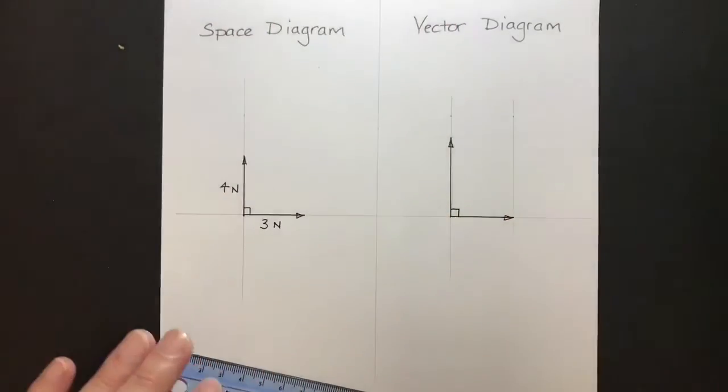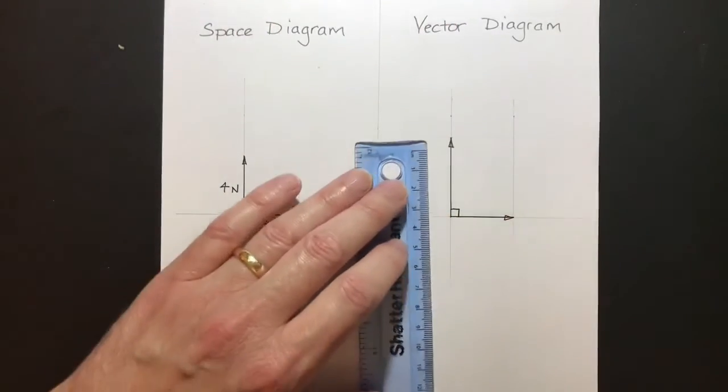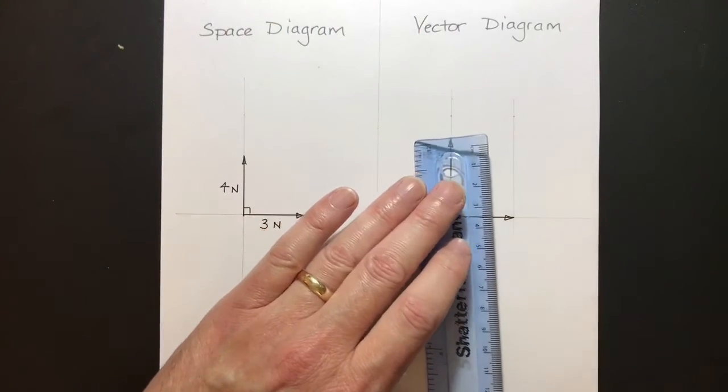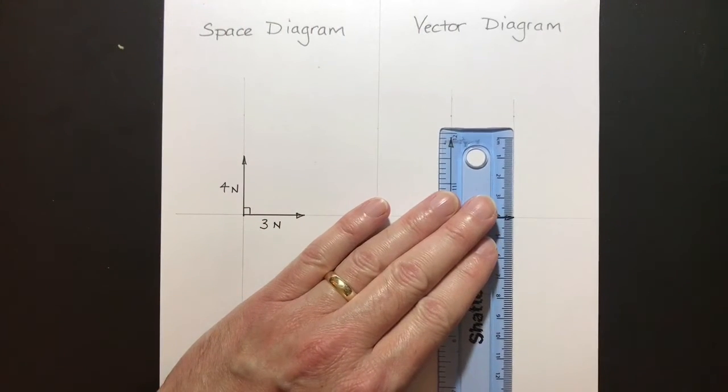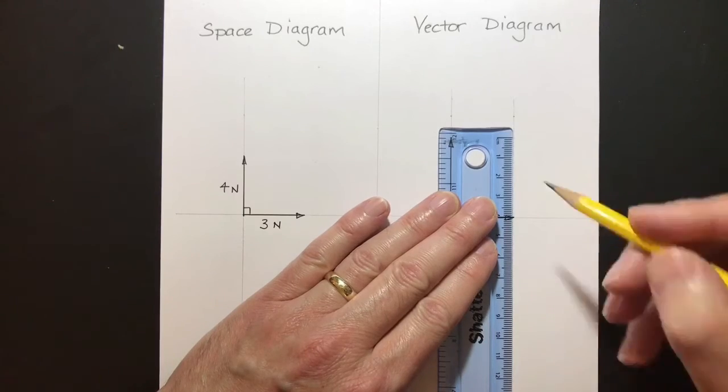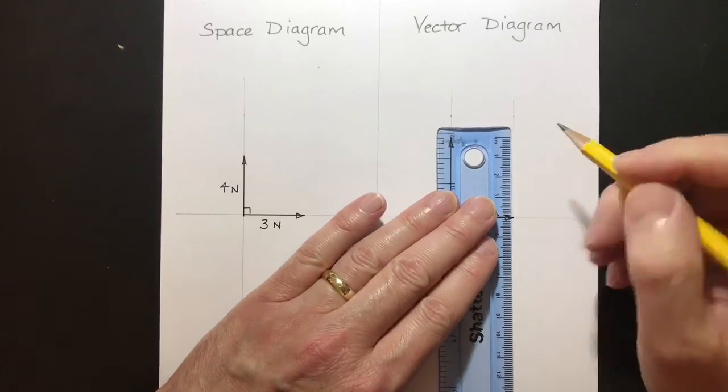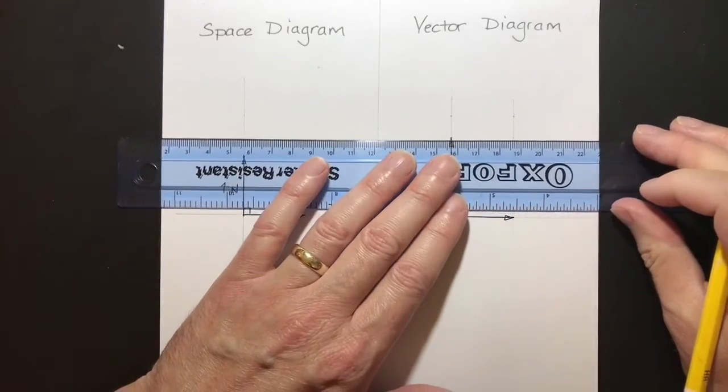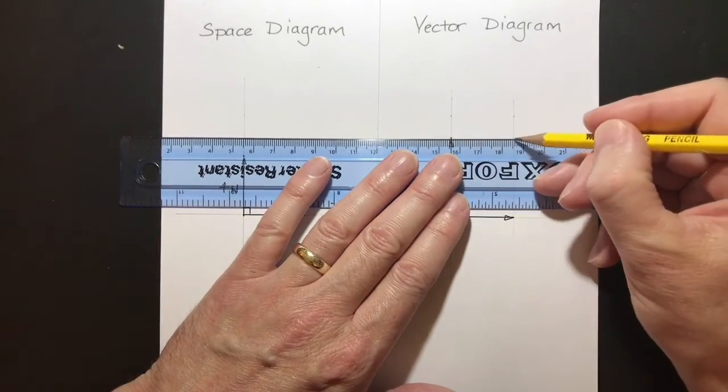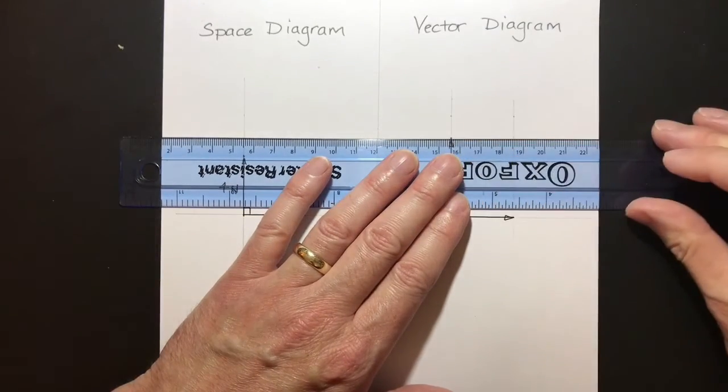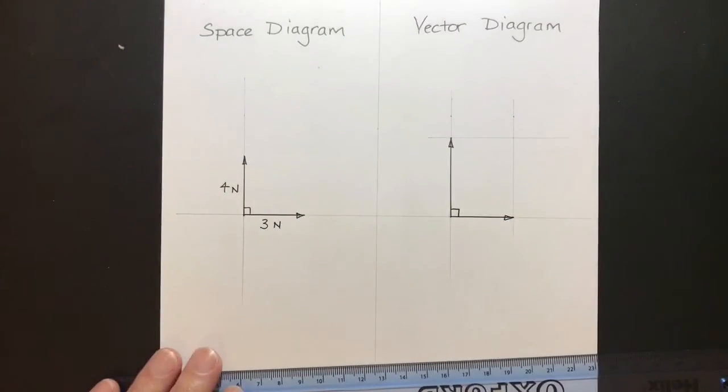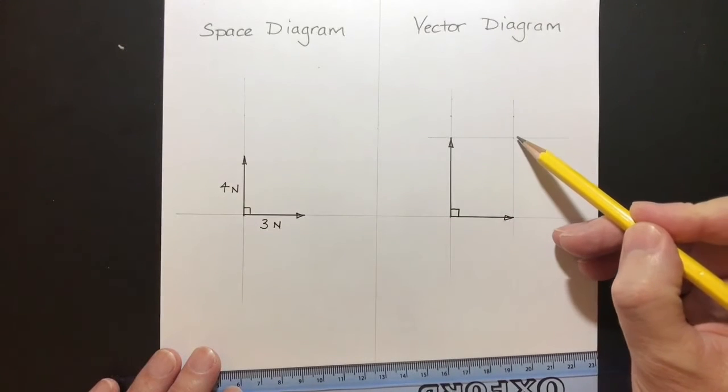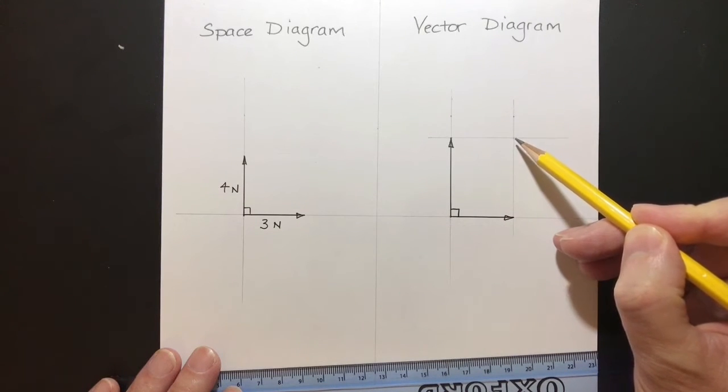or knowing that it's 4 centimeters long, I can go to the line I've just drawn and just mark off a point at 4 centimeters there. Then all I need to do is line up that mark I've just made here with the tip of the 4 Newton vector. There we go.